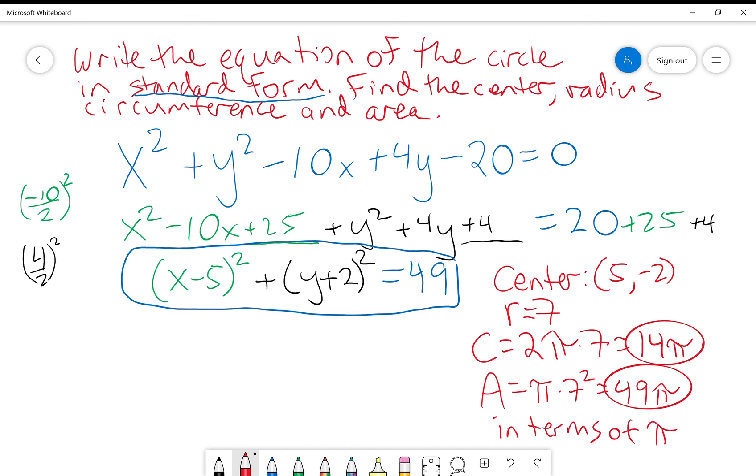All we're saying is we're leaving pi in the answer. It is an exact answer this way. We did not round. If we were to plug 14 times pi, use the pi button, second caret on your TI-84, well, then you would be getting a decimal. You'd be rounding, thus it is no longer exact. So these are in terms of pi.